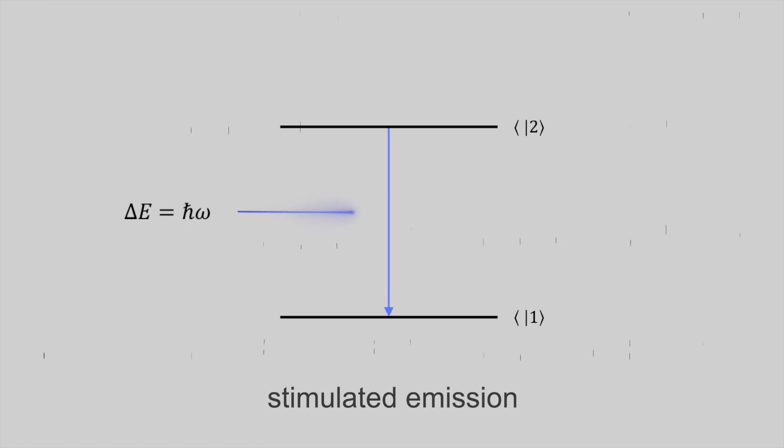So in contrast, the Gegenspieler of spontaneous emission is stimulated emission. In stimulated emission, an incoming photon of a specific frequency, which corresponds to the energy difference between the two states, can interact with an excited atomic electron, causing it to drop down to a lower energy level.